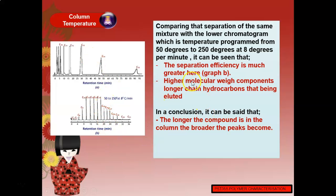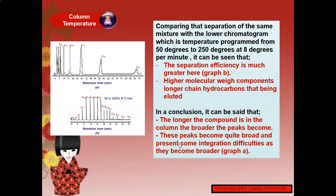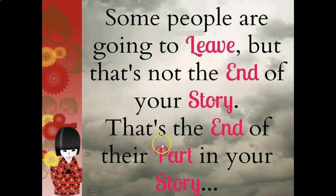The separation efficiency is much greater using temperature programming. Higher molecular weight, longer-chain components are eluted in a reasonable time. In conclusion, the longer a compound remains in the column, the broader the peaks become. Increasing the temperature decreases retention time — under isothermal conditions at 150°C it takes about 95 minutes for elution, and peaks become quite broad presenting integration difficulties. That concludes this lecture on migration rate; we will continue with exercises to get familiar with the equations.